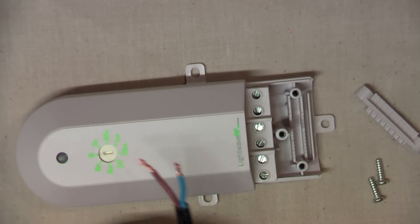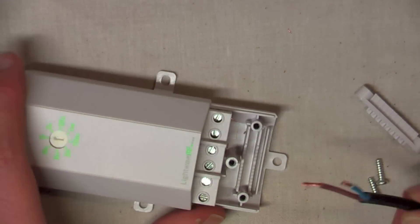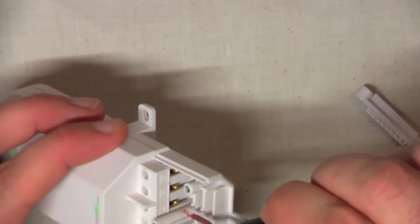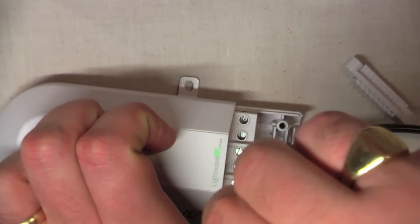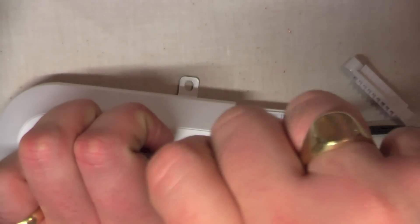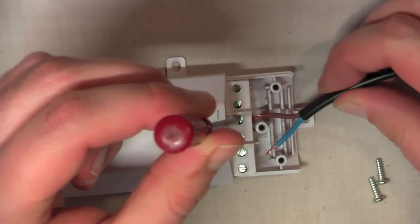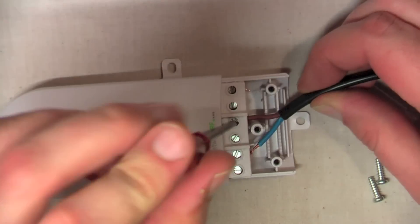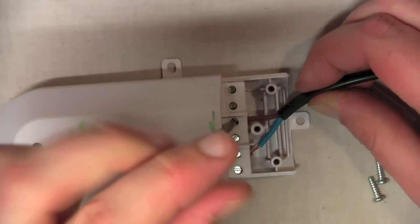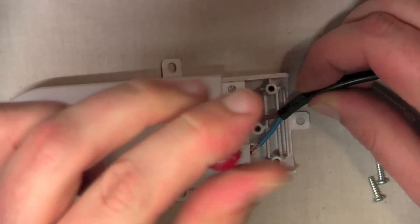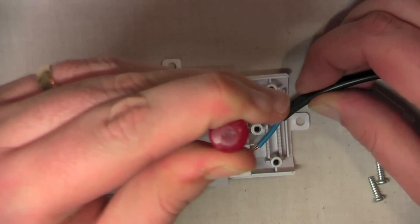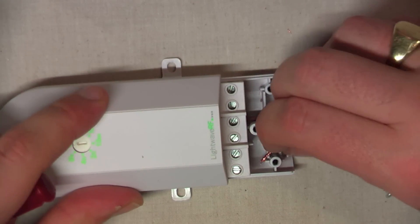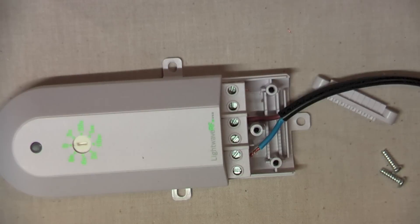So we'll connect up the supply side first. Obviously brown to live, blue to neutral. And we'll stick these in and tighten them up. I'm going to do one at a time, just for ease of use. There we go, there's the brown in there, into the live. We'll tighten that one up. It's just popped out. There we go. Brown into there. Tighten that screw there.